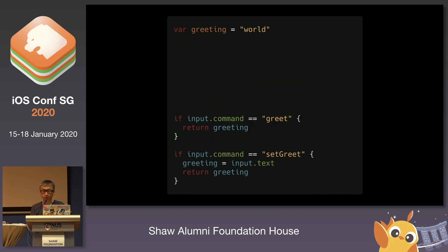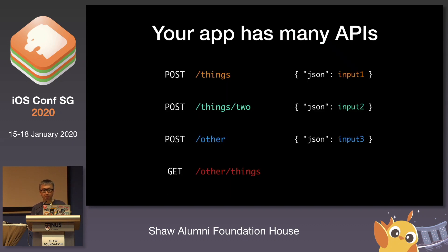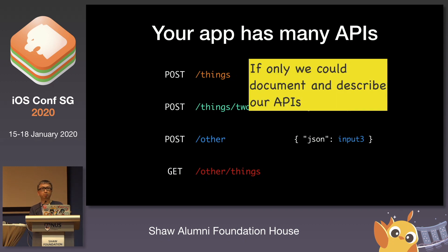Refactoring a little bit, we have two functions: 'set greet' takes in a string and returns a string; 'greet' returns a string. But in our apps with many APIs, of course it's going to be more than four, because CRUD, and then you have like five entities. How I wish there was a way to describe our documents, our APIs — if only there is a way to document this.